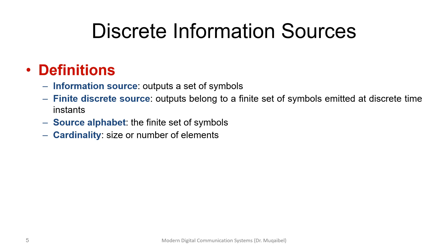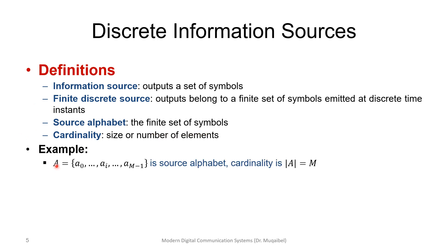To define discrete information sources more formally: the information source outputs a set of symbols. A finite discrete source has outputs belonging to a finite set of symbols emitted at discrete time instances. The source alphabet is the finite set of symbols — in binary we have zero and one. The cardinality is the number of elements, i.e., how many possible outcomes there are. If the alphabet set A has elements a₀ up to a_{M-1}, then the cardinality |A| equals M.